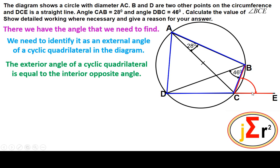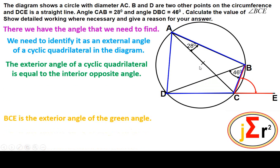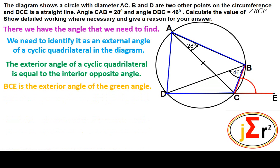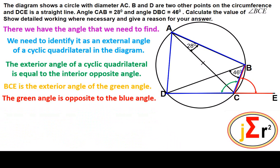The angle BCE is an external angle of the cyclic quadrilateral in the diagram. BCE is the exterior angle of the green angle, which is now shown. The angle we need to find is an external angle of that green angle, and the green angle is opposite to the blue angle.